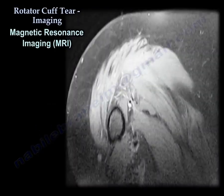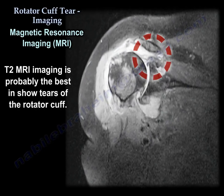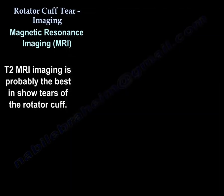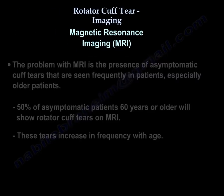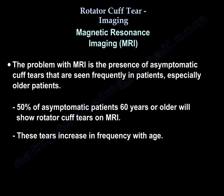When it comes to the MRI, T2 is probably the best sequence for showing tears. One problem with MRI is the presence of asymptomatic cuff tears, which are seen frequently in patients, especially older individuals. About 50% of asymptomatic patients 60 years or older will show tears on an MRI, and these tears increase in frequency with age.